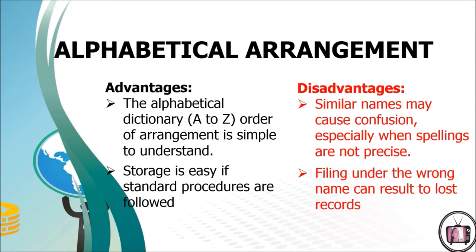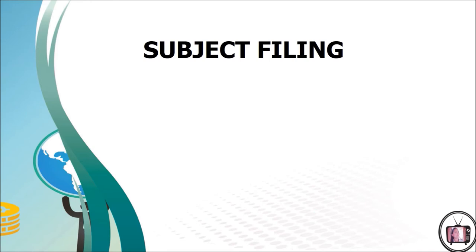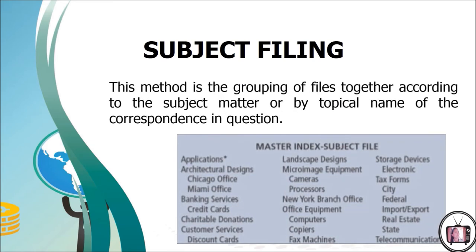The second type of filing arrangement is subject filing. This method is the grouping of files together according to the subject matter or by topical name of the correspondence in question. This method is recommended when the range of topics used within an organization is broad. Arranging of records by subject categories such as topic, department, service, product, or project. The subject title must be short and clearly descriptive of the material it represents.